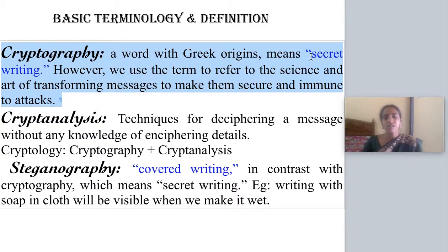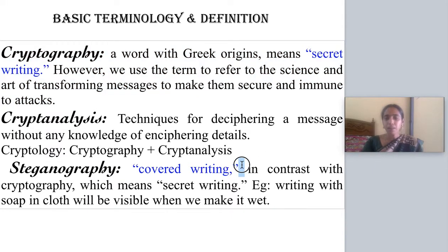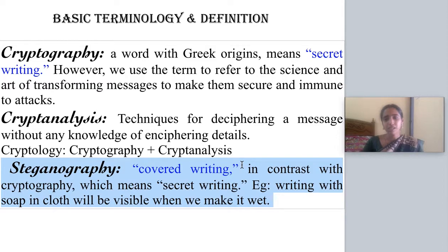The next one is steganography. Steganography means writing the text in a covered format — covered format means it will not be visible. For example, the magic ink: writing with magic ink on a cloth, if you write with soap it won't be visible, but if you immerse it in water it will be visible. So the message is there, but you cannot directly see it. It is covered in some form, and if you perform some process, it will become visible.